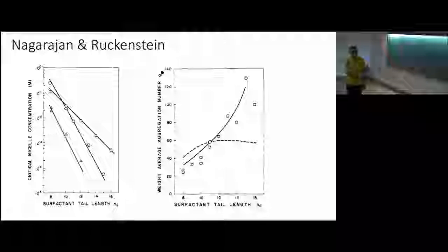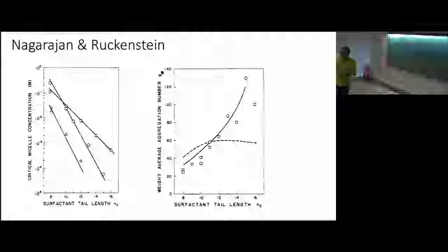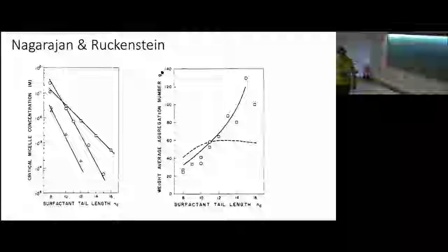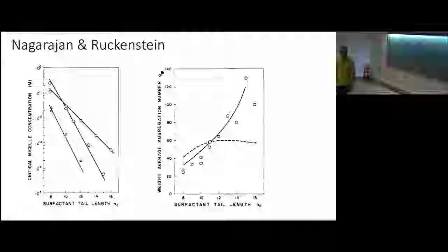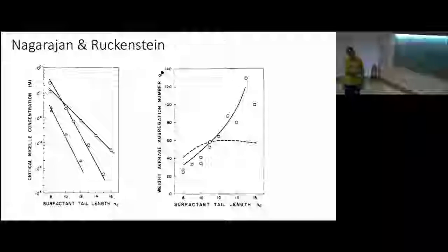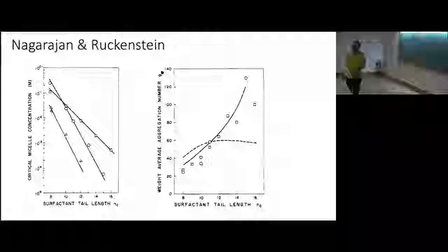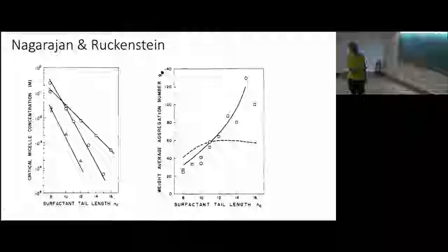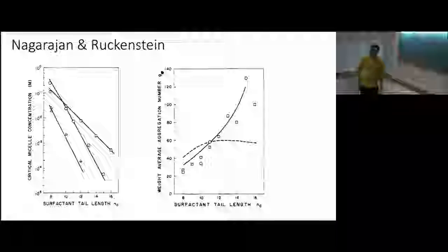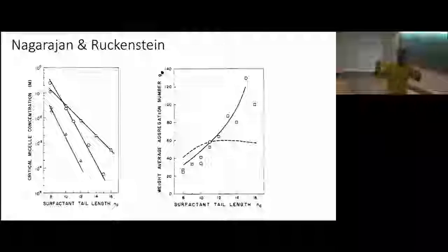You get good agreement for the critical micelle concentration, and they used polymer theory for the surfactant tail. There's probably some cancellation of errors going on — I'm not entirely satisfied this is really great, but it tells you you've got most of the essential physics. As you make the tails longer, the critical micelle concentration goes down — the chain wants less and less to be dissolved in water and forms micelles very easily. And as the surfactant tail gets longer, you make bigger micelles, which sort of makes sense.